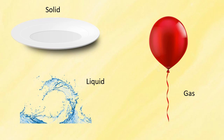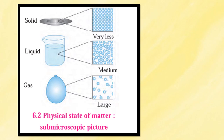The particles of solids are very close to each other and vibrate at their fixed position. From the diagram, we can see this arrangement. Due to this, solids have properties like definite shape and volume, and also high density and non-compressibility. Density means compactness, and non-compressibility means the solid cannot be reduced in size by pressure.